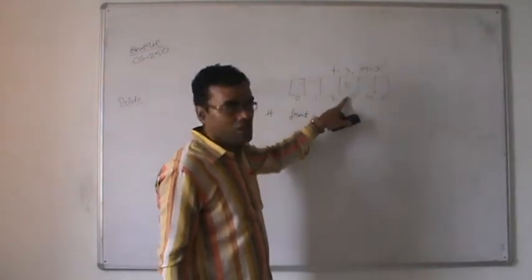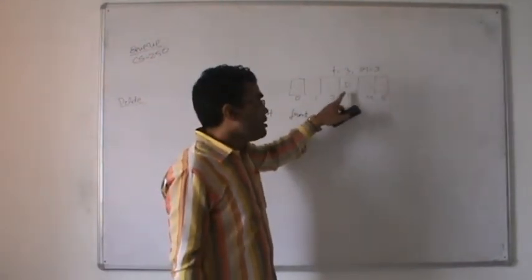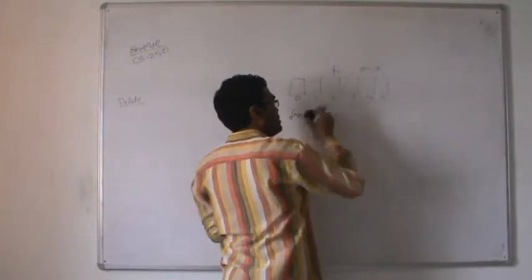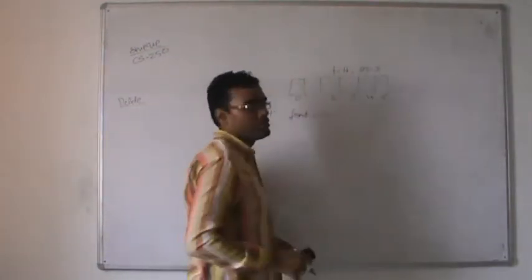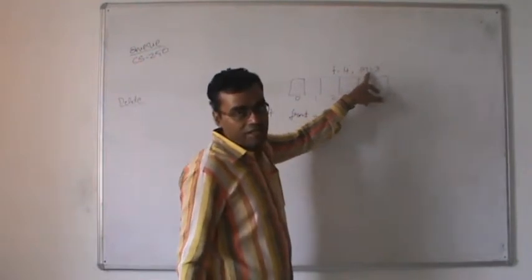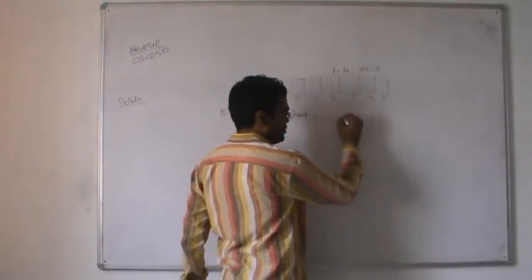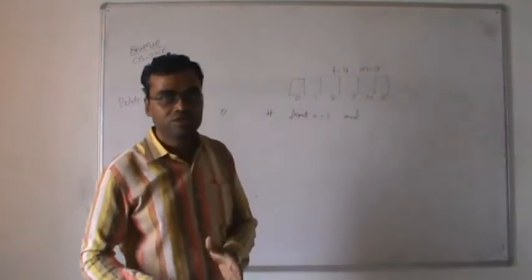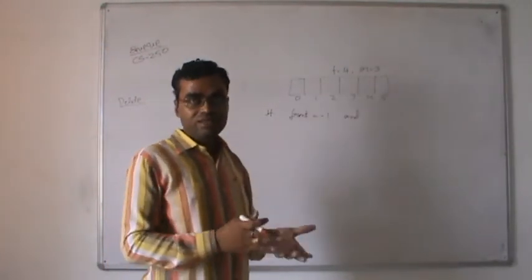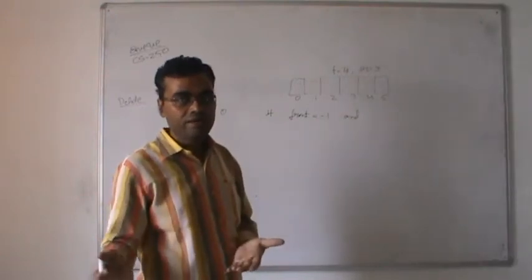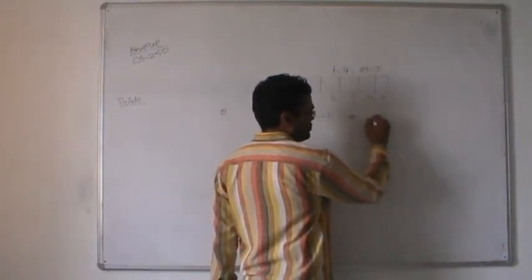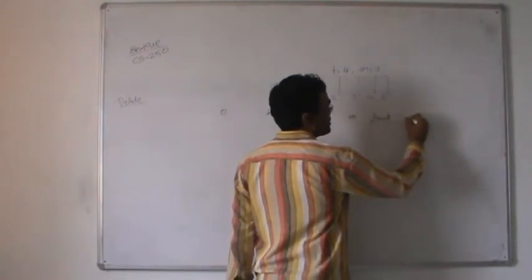When front equals rear, both are pointing to the same position. When D is deleted, the front becomes 4. At that point, the value of front is greater than rear, which is another condition for an empty queue. So the conditions for empty queue are: either front equals minus one, or front is greater than rear. If no element is present, we indicate underflow. Otherwise, we get the value from the front position, increment front by one, and continue deletion.